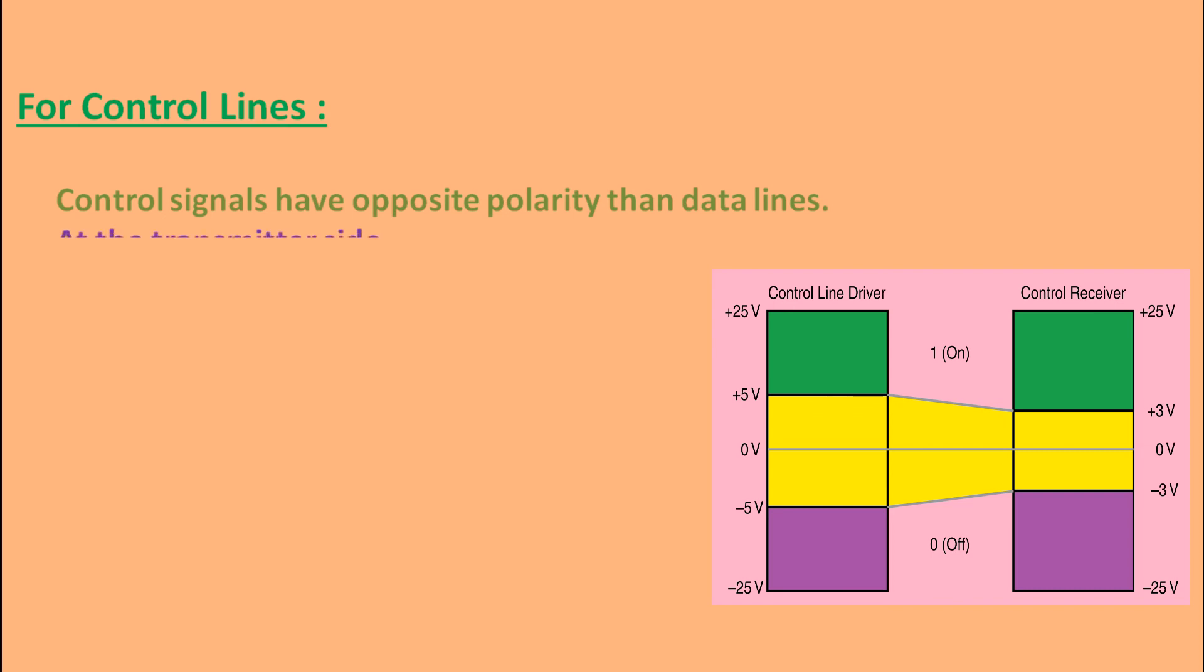The control or handshake lines have the same range of voltages as the transmission of logic 0 and logic 1, but the only difference from data lines is that they are of opposite polarity.